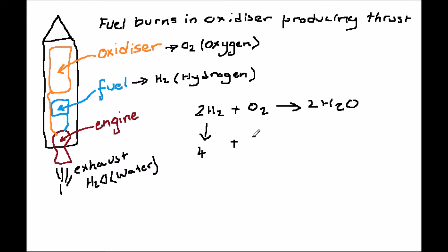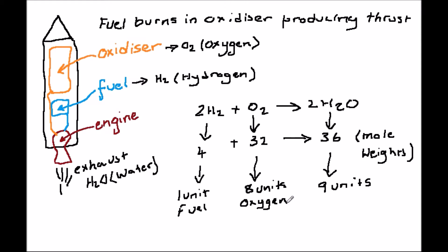The molecular mass of oxygen is 32 and that of hydrogen is 2. So the relative weights in the reaction are 4 for the two hydrogen molecules plus 32 for the oxygen molecule, producing 36 for the two water molecules. If we divide this by 4, we get 1 unit of fuel burnt with 8 units of oxygen to produce 9 units of exhaust gases.